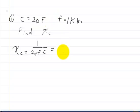We're just going to plug in these values. You could rewrite this or you could just use the 0.159. You can say 0.159 over the frequency, which is 1 kilohertz, and then multiply that by the capacitance, which is 20 farads.